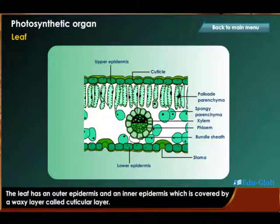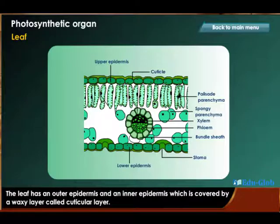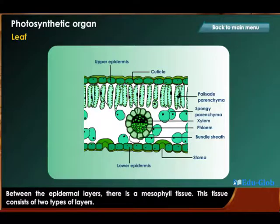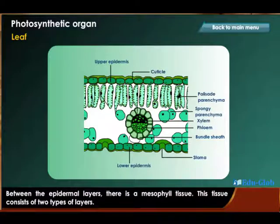The leaf has an outer epidermis and an inner epidermis, which is covered by a waxy layer called the cuticular layer. Between the epidermal layers, there is a mesophyll tissue. This tissue consists of two types of layers.